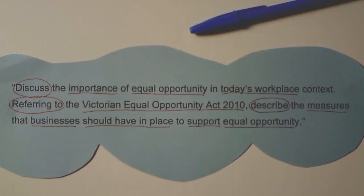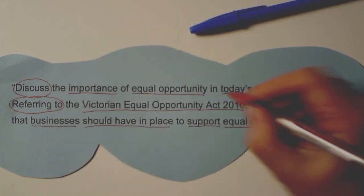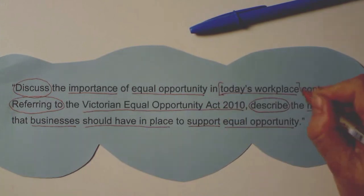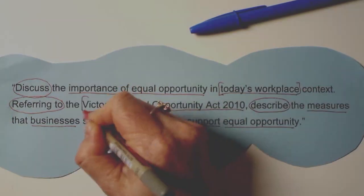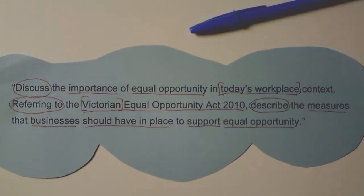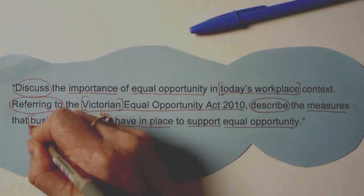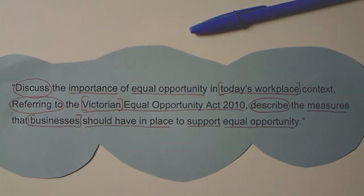In this case, our limiting words include 'today's workplace,' 'Victorian,' and 'businesses.' So when we commence researching this topic, we know that we need to limit our search to recent research, the Victorian Equal Opportunity Act, and the business context. Finding information that relates to 20 years ago, the Western Australian Equal Opportunity Act, or even schools would be irrelevant and off-topic in this instance.